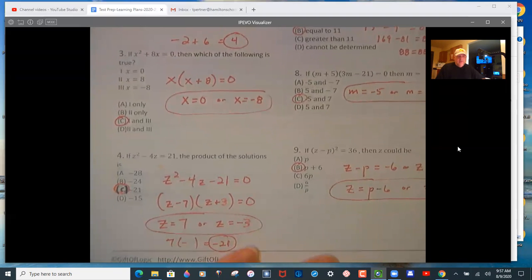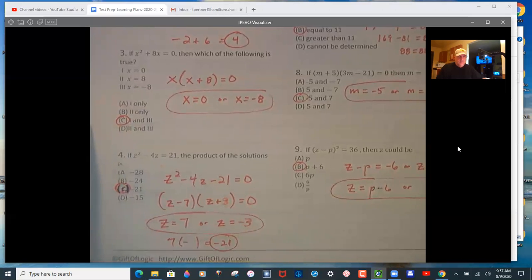And then you have to sum negative 2 plus 6. And then which of the following is true? On number 3, factor out the x, so x times x plus 8. So 0 and negative 8 are the two zeros. And so 1 and 3 are the solutions.